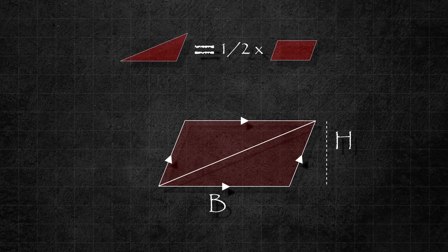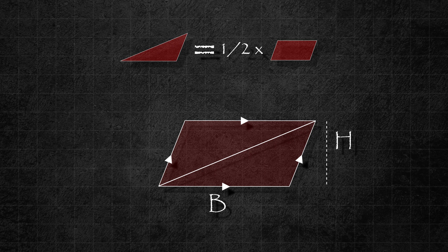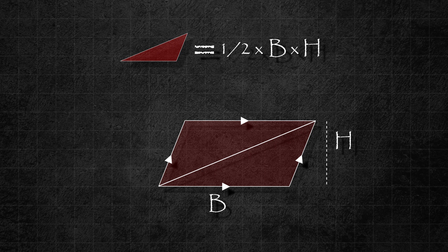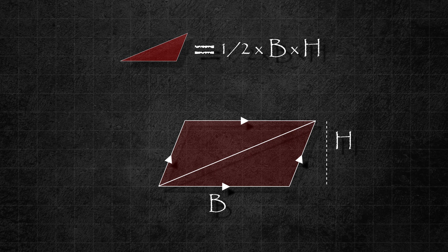This means the area of our original obtuse triangle would be half of the area of the parallelogram. We have already found the formula for the area of a parallelogram and it is base times height or b times h. So the area of our original obtuse triangle would be half times b times h.